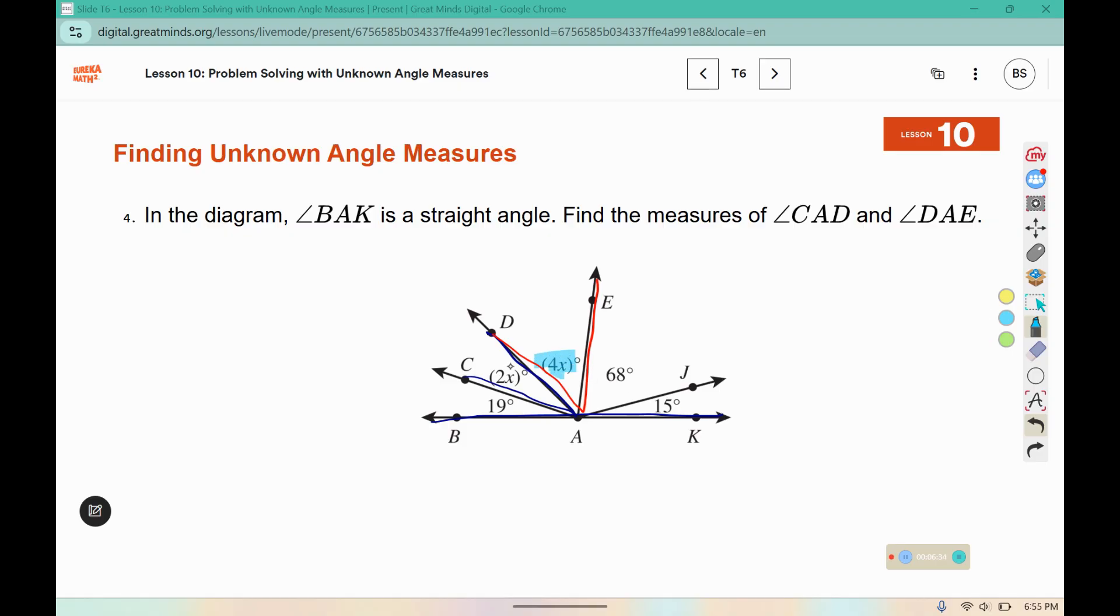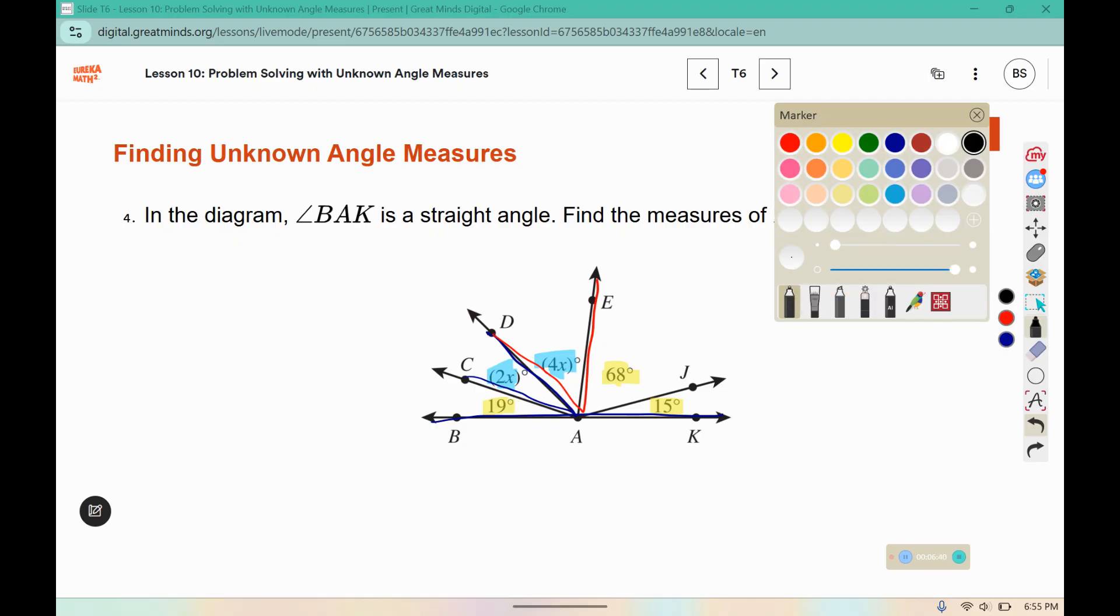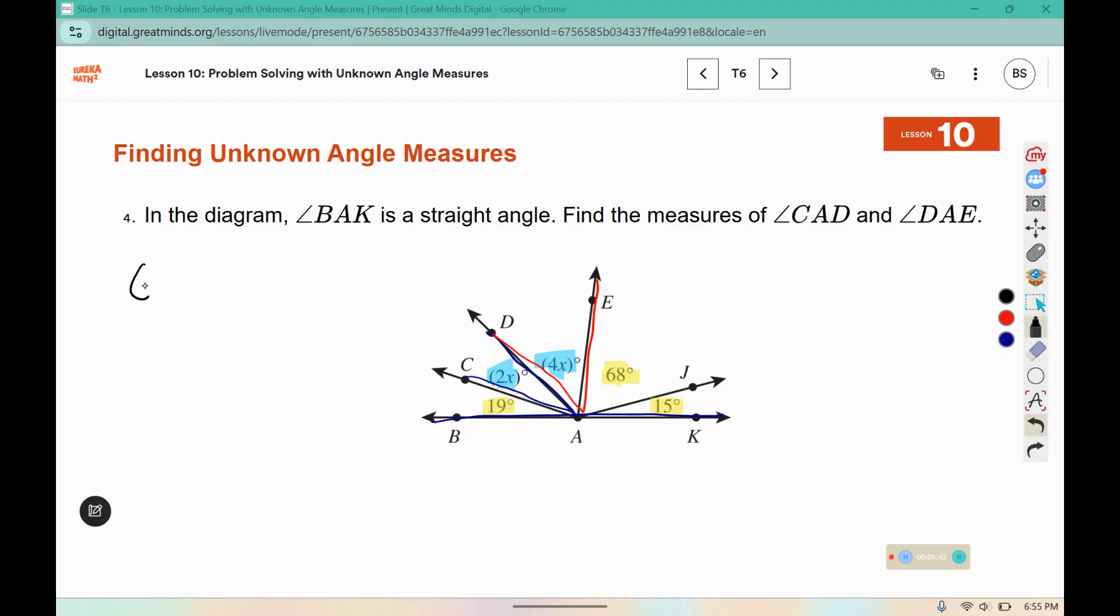And then the number pieces that can be combined as well. So 2x plus 4x is 6x. 19 plus 15 makes 34. 34 plus 68 is 102.